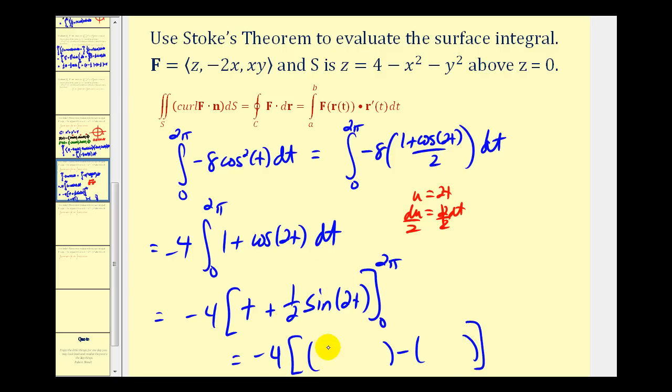So when T is two pi, we'll have two pi, plus sine of four pi, that's going to be zero, minus zero, plus zero. It looks like we have negative eight pi.